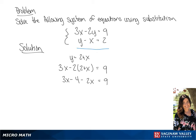3x minus 2x is just x, so we have x minus 4 equals 9. If we add 4 to each side, we get x equals 13.